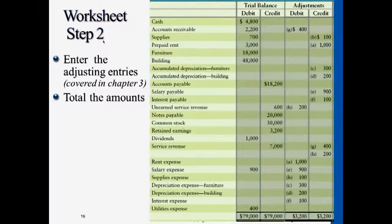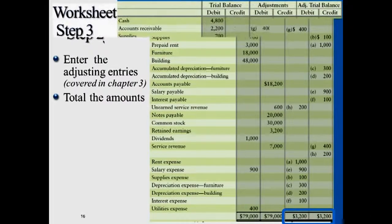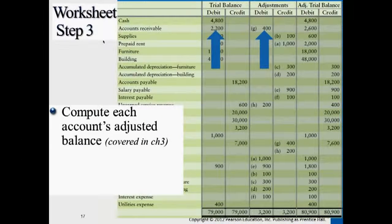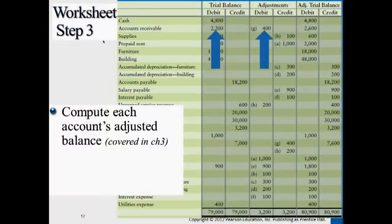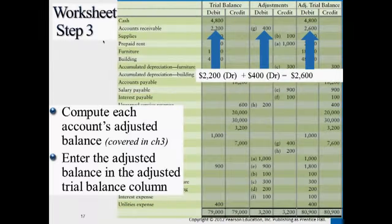The second column: briefly reviewing the adjustments, there are entries A through H. For example, accounts receivable originally has a balance of $2,200, meaning later on there will be cash received of $2,200. The adjustment shows $400 on the debit side, so we add this to $2,200 because the asset normal balance is the left side — the plus side. The $400 on the left side means some type of service was provided: service revenue provided but not yet collected cash from customers. So this is an additional accounts receivable, giving an adjusted balance of $2,600.